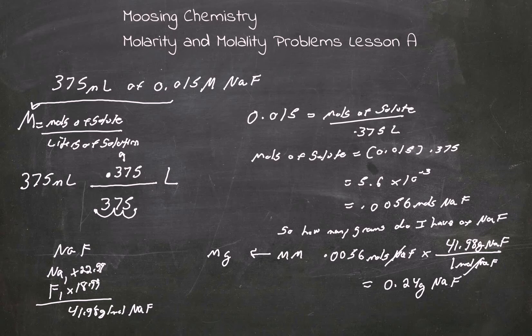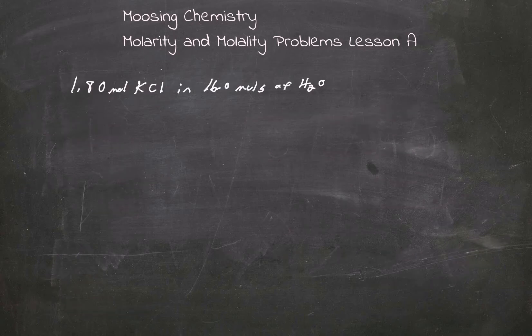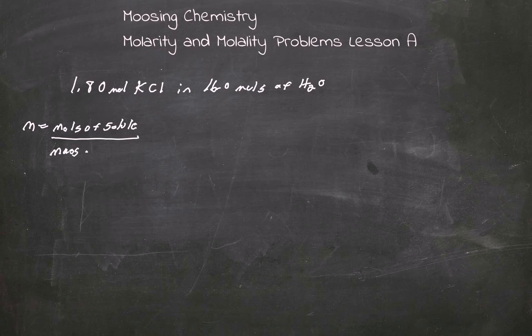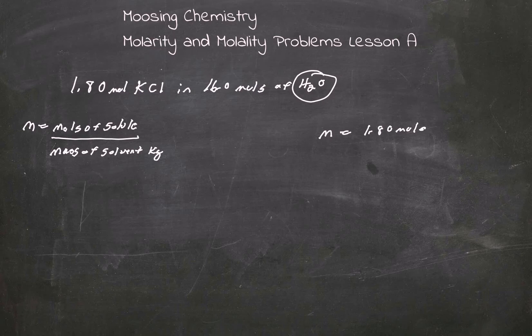Now let's do a molality problem. Molality is moles of solute over mass of solvent in kilograms. Our solvent is H₂O, and we have 1.80 moles of KCl on top. But first we need to find the mass of the solvent. We know we have 16.0 moles of H₂O, and we want to turn that into grams.